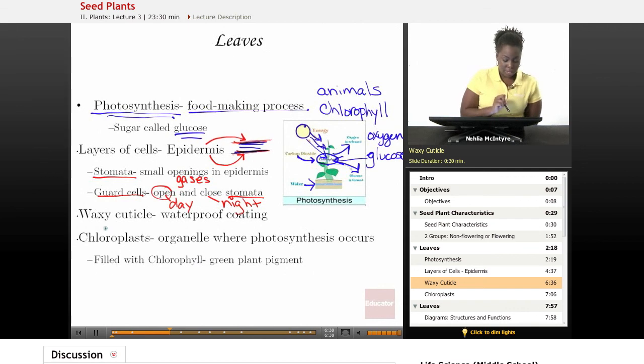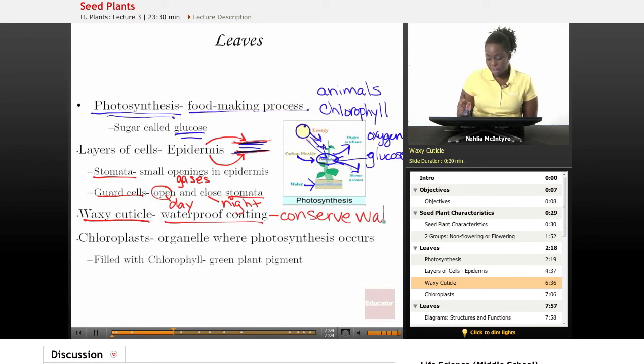Another characteristic of a leaf is that outside of the epidermis, there's this waxy cuticle. You have probably seen it if you've ever had a leaf and maybe scratched some of it. It's like this clear kind of coating. It's a waterproof coating that helps the plant to conserve water so that the water inside of the plant does not evaporate.